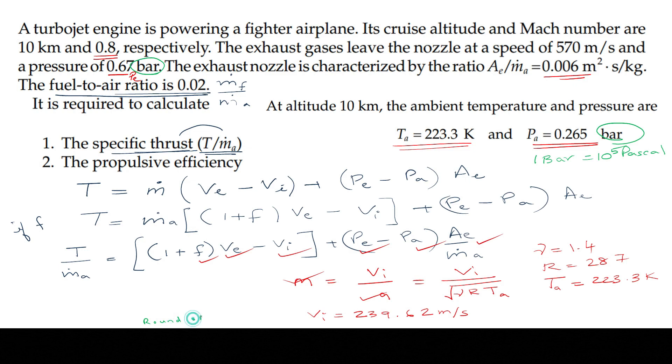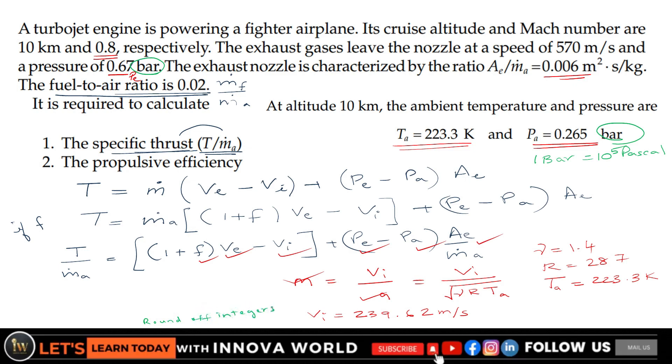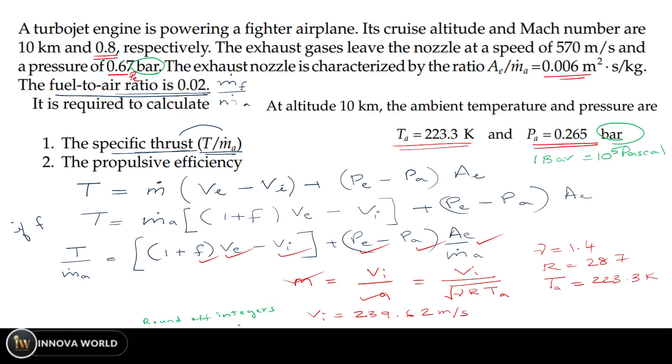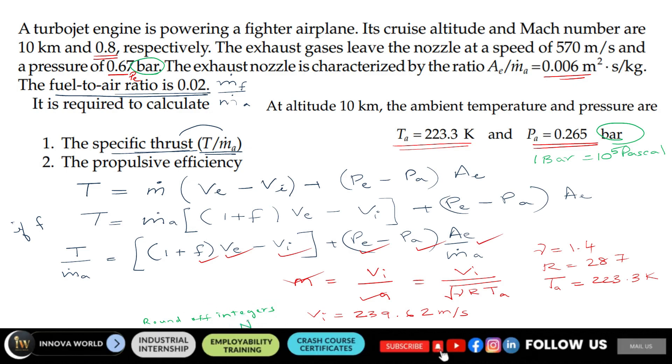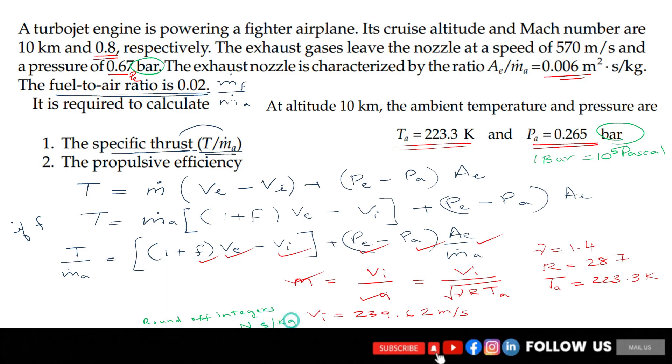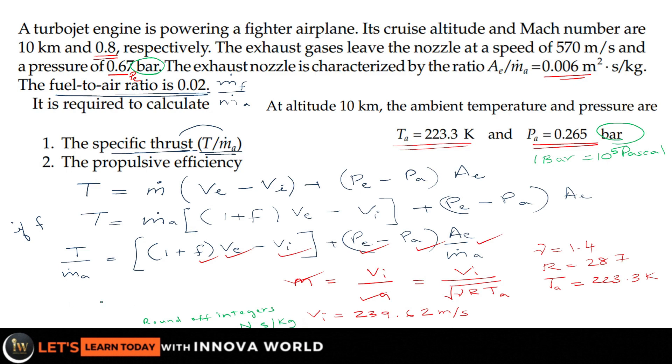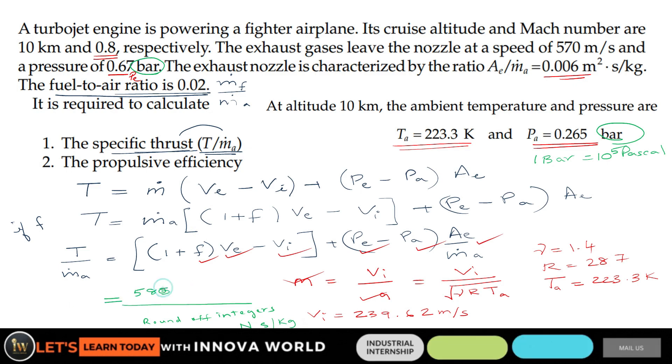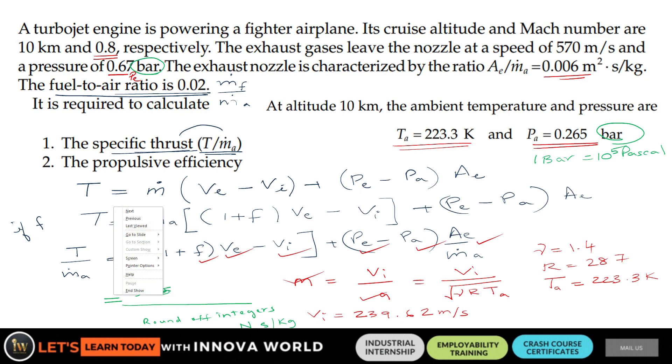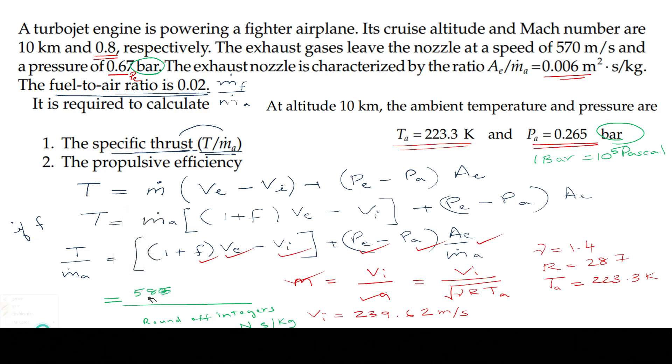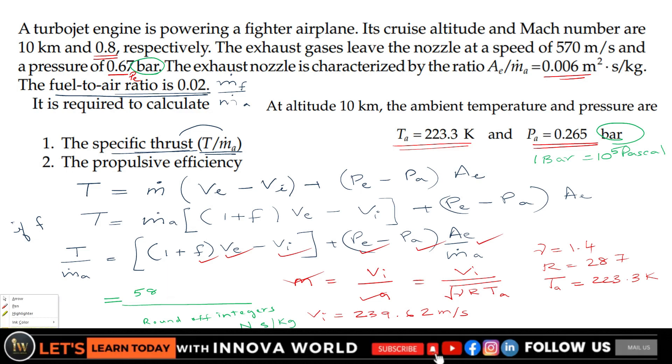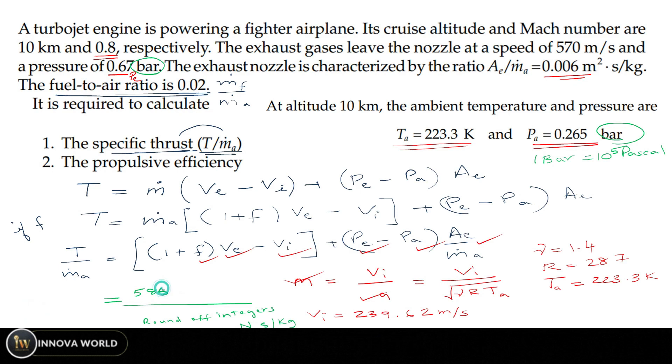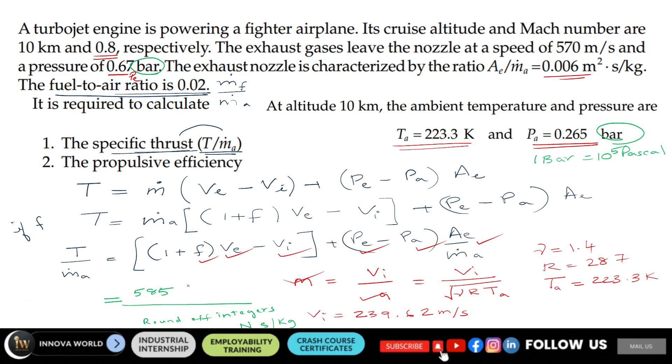Tell me the answer, rounded to integers. The unit should be Newton-second per kg. Ensure that I need the unit in terms of N·s/kg. The right answer is 585, as per my calculation. Ensure you are getting the answer as 585 or close to that.